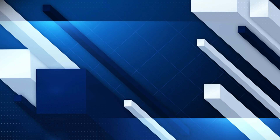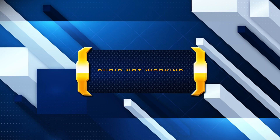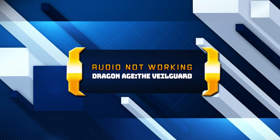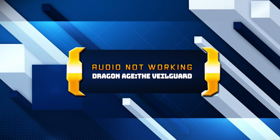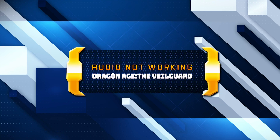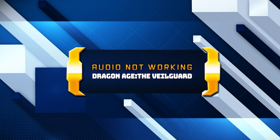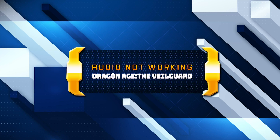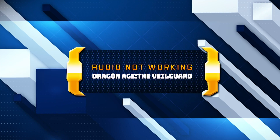If you are playing Dragon Age The Veil Guard and your sound is crackling, too low, or it stutters, this could be happening because your audio drivers are damaged or incompatible, which can lead to audio glitches, distortions, or no sound at all. Watch this video to learn how to fix your sound issues in Dragon Age The Veil Guard in Windows 11 and Windows 10.